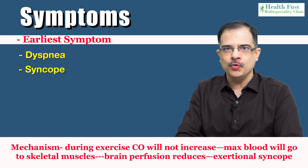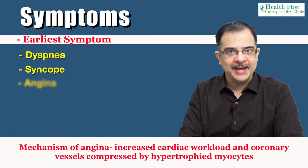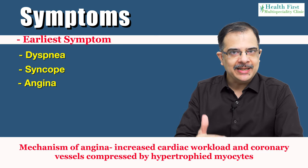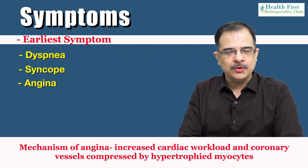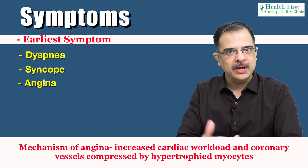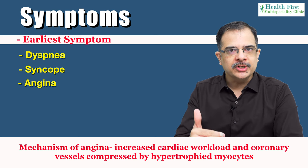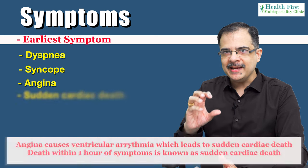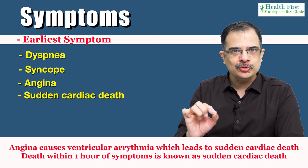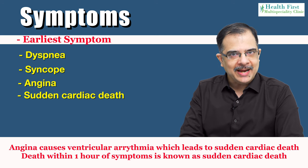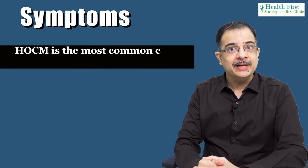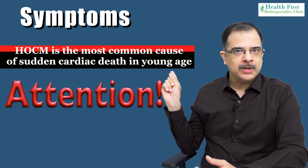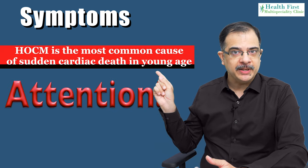The third symptom is angina. The reason for angina is increased cardiac workload, and the hypertrophic muscles compress the blood vessels of the heart, leading to decreased blood flow. Because of the angina, there is a risk of ventricular arrhythmias, and the patient can have sudden cardiac death — defined as death within one hour of symptoms. HOCM is indeed the most common cause of sudden cardiac death in young patients.